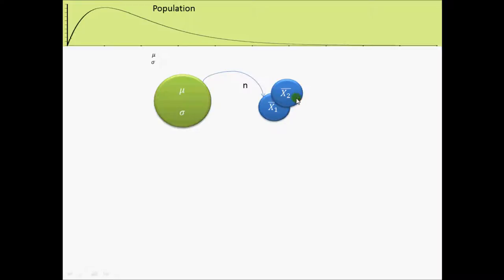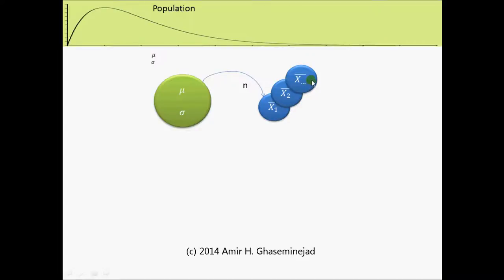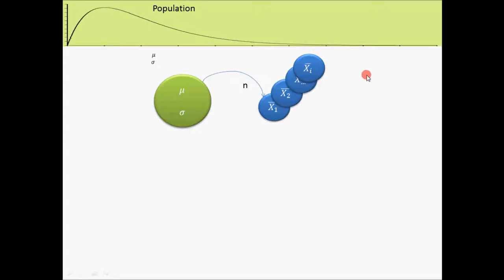So x1 bar and x2 bar, we don't expect that they would be very different. If we take another sample, the observations in this sample — we assume that these are simple random samples — and for one sample mean to be very different than other sample means, it means that the values of that sample should be either from the very right tail or from the very left tail of the distribution of the population, and if you have a simple random sample, it is not expected to happen. If we continue taking all possible samples and look at their means from x1 bar to xi bar, then this sample mean by itself makes a variable for us.